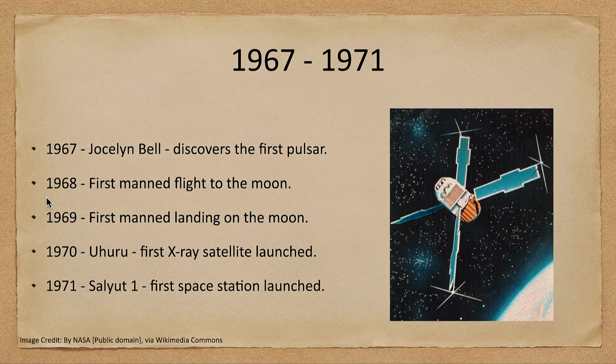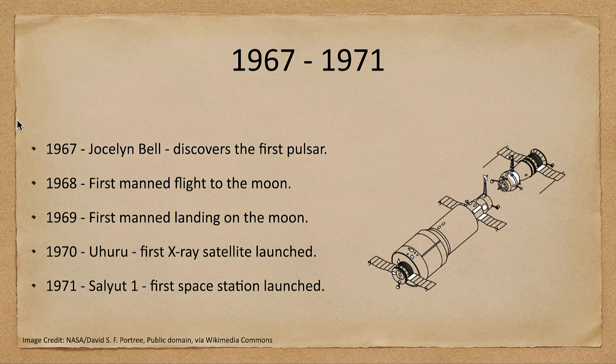Coming into the 1970s, we had the Uhuru satellite — the first chance to look at X-rays from space. We had visible light for a long time, then added the ability to look in radio waves, and now getting above the atmosphere we could see X-rays. Also in the 1970s, the Salyut 1 was launched — the first space station — to study the universe from space.